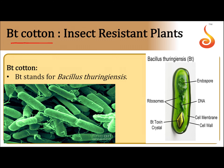Bt cotton — Bt stands for Bacillus thuringiensis. Bacillus thuringiensis is a type of bacteria that has cry genes. These cry genes synthesize protoxins, which are present in the parasporal crystal in an inactive form.